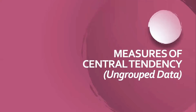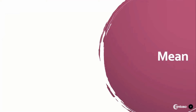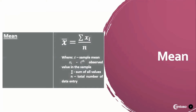Let's now discuss the measures of central tendency for ungrouped data, starting with the mean. The formula for the mean is x bar, which is equal to the summation of x sub i all over n, where x bar is the sample mean, x sub i is the i-th observed value in the sample, summation is the sum of all values, and n is the total number of data entry.